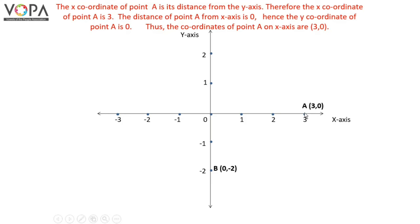The x-coordinate of point A is its distance from the y-axis, therefore the x-coordinate of point A is 3. The distance of point A from the x-axis is 0, hence the y-coordinate of point A is 0. Thus, the coordinates of point A on the x-axis are (3, 0).